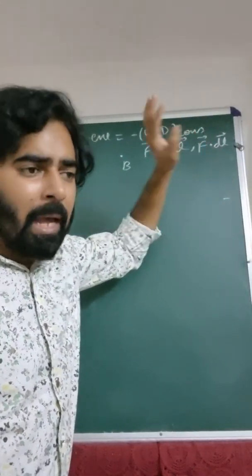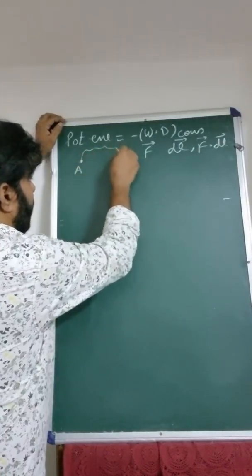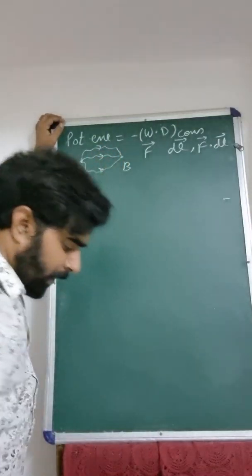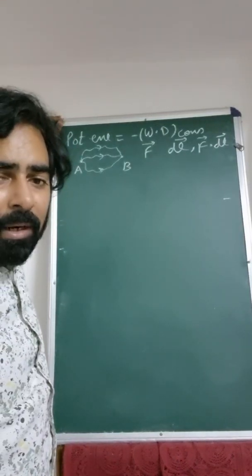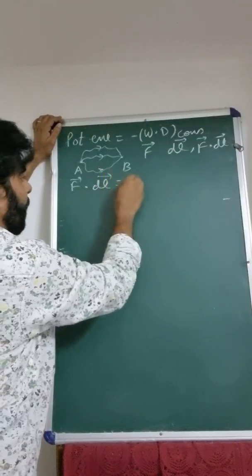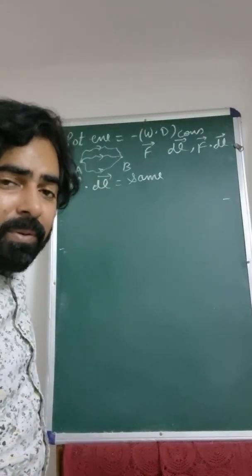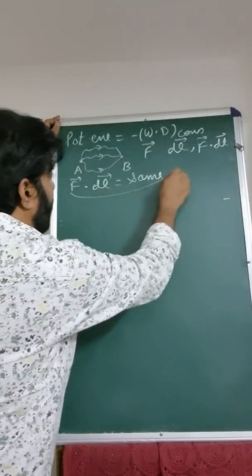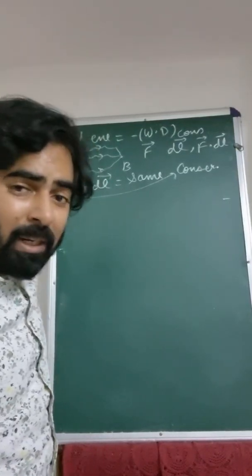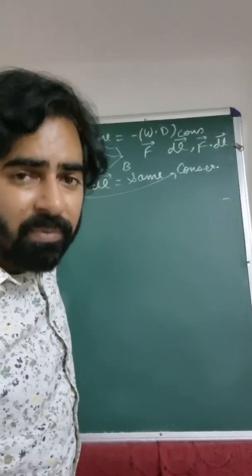This F·dl will decide whether the force is conservative or not. Theory says: we calculate F·dl for different paths — we can choose any path — and if this F·dl is the same for all paths from A to B, then this force is called a conservative force. If this quantity is different for different paths, then the force is non-conservative.